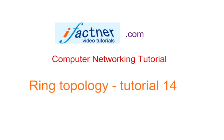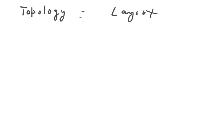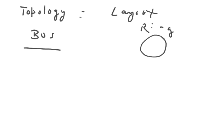Hey guys, welcome to the 14th computer networking tutorial from ifactner.com. Today we will discuss ring topology. We have already discussed that topology means the layout of a computer network — how it is physically or logically laid out. There are four types of topologies: bus topology, ring topology (our topic today), star topology, and mesh topology.